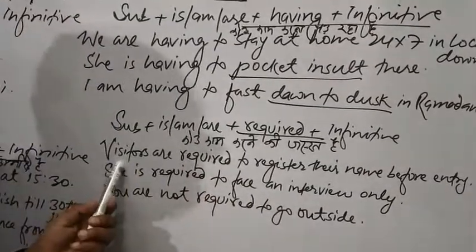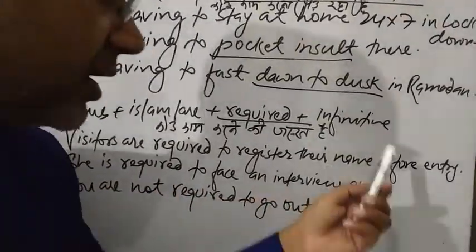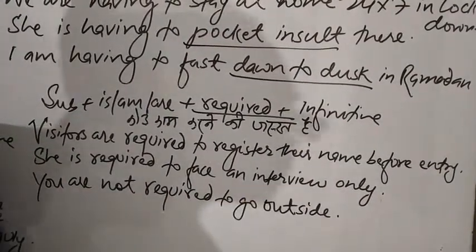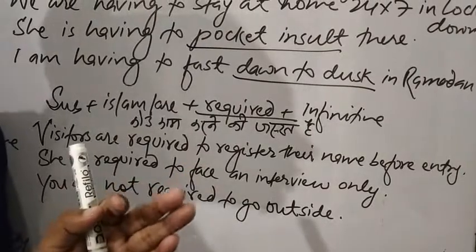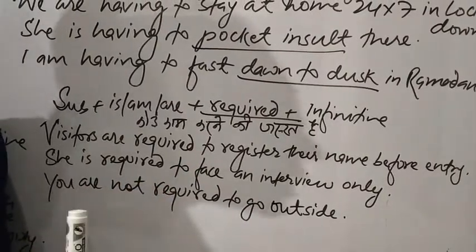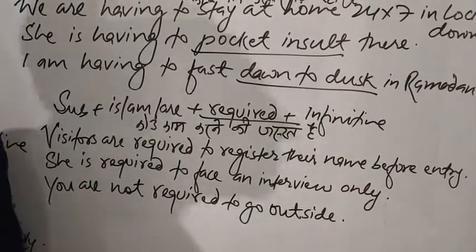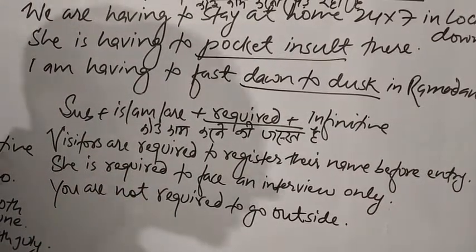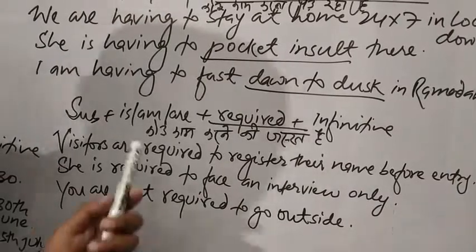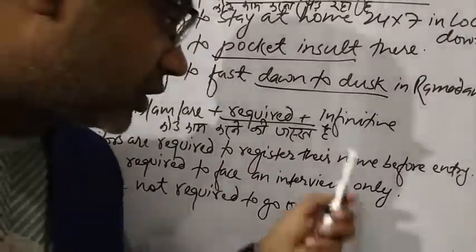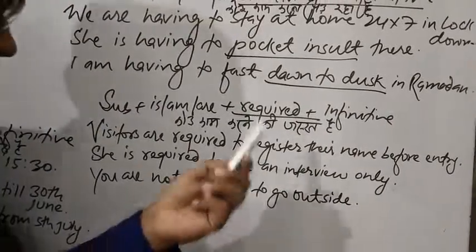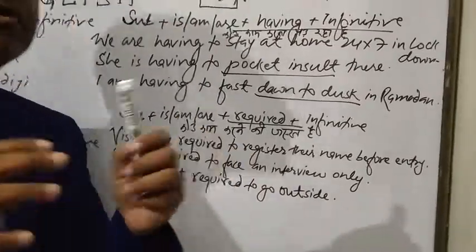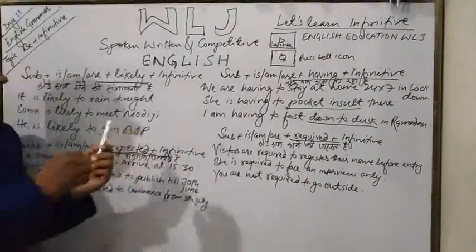'Required to' means something is necessary or needed. Example: 'Visitors are required to register their name before entry.' This sentence is very commonly found in big schools and apartments where a watchman asks you to write your details. Second: 'She is required to face an interview.' Third: 'You are not required to go outside' — meaning there is no need for you to go out.